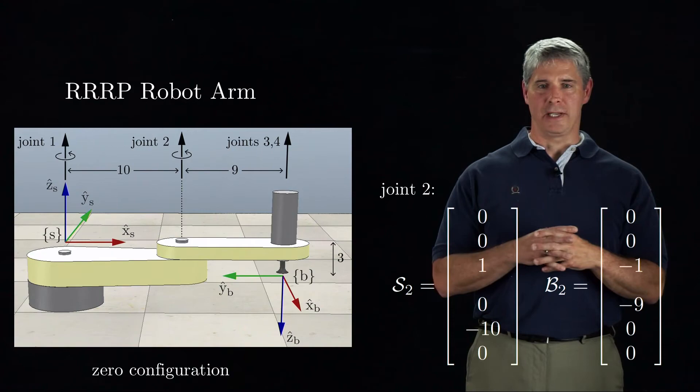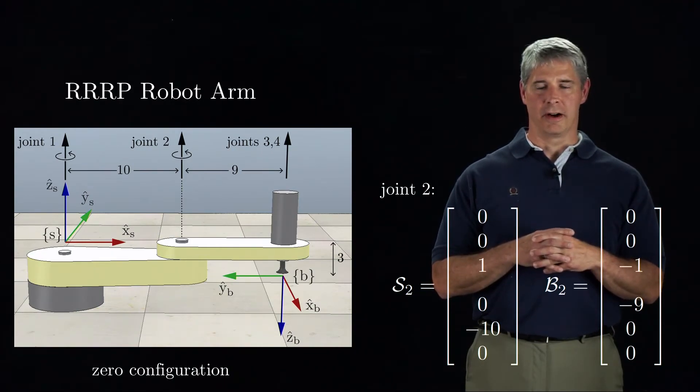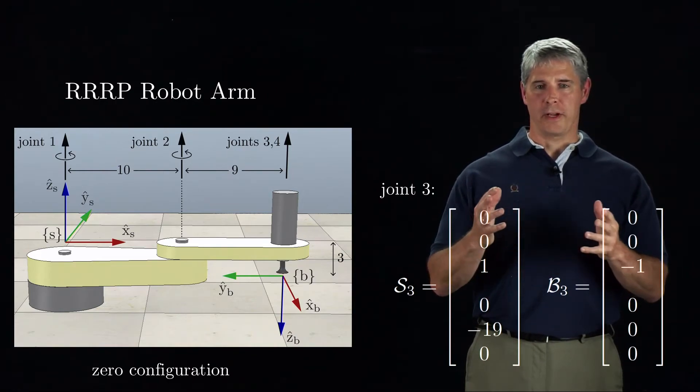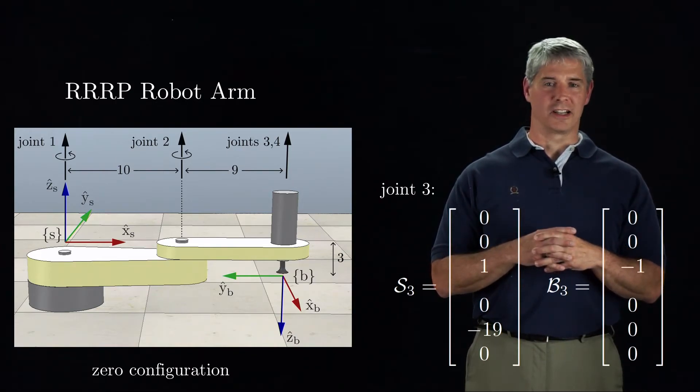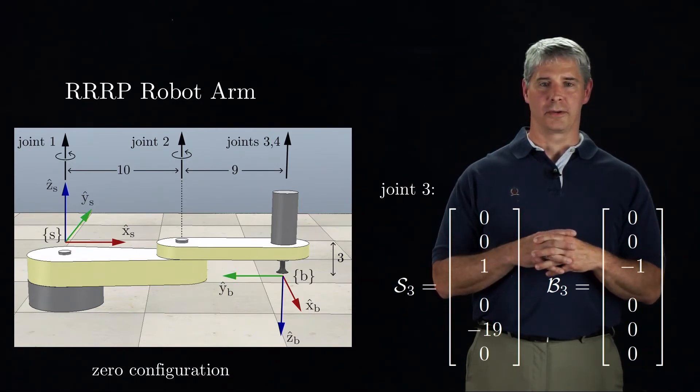The screw axis B-2 in the B-frame is [0,0,-1; -9,0,0]. Joint three's rotational screw axis induces a large linear velocity at the origin of the S-frame, but zero linear velocity at the origin of the B-frame.